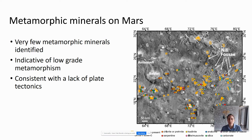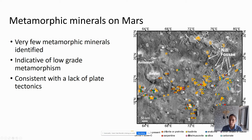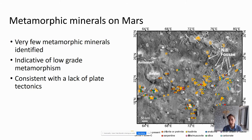Moving on to metamorphic minerals on Mars, very few have been identified on the surface, and those that have are indicative of low-grade metamorphism. This map of the Nili Fossae region shows different minerals from infrared spectroscopy, including low-grade metamorphic minerals such as analcime (a zeolite, shown in dark blue) and chlorite or prehnite (in orange). This lack of high-grade metamorphic minerals is consistent with the absence of plate tectonics on Mars, which never had the ability to bring rocks from the subsurface that experienced higher pressure and temperature regimes.